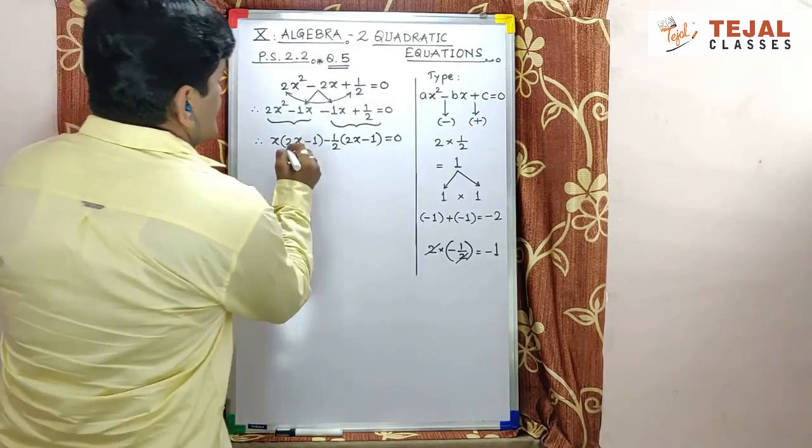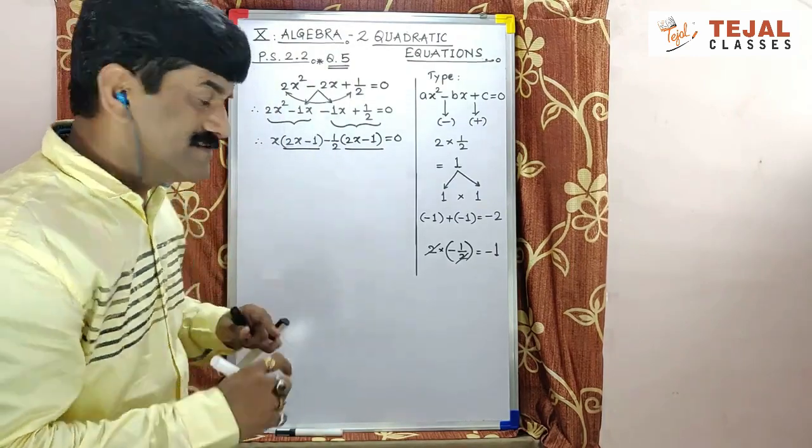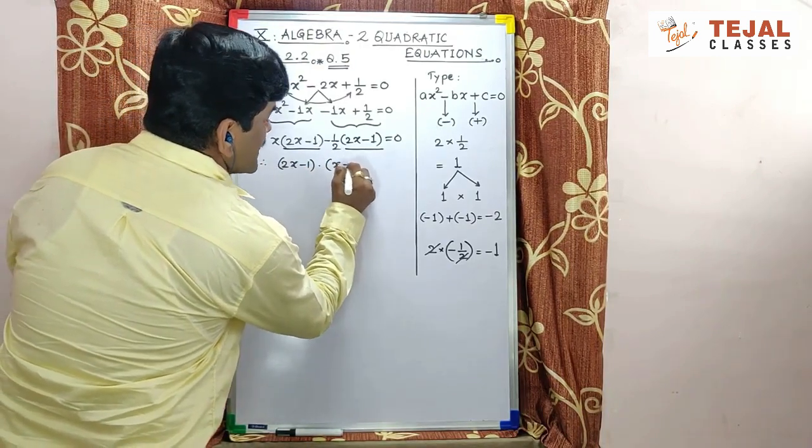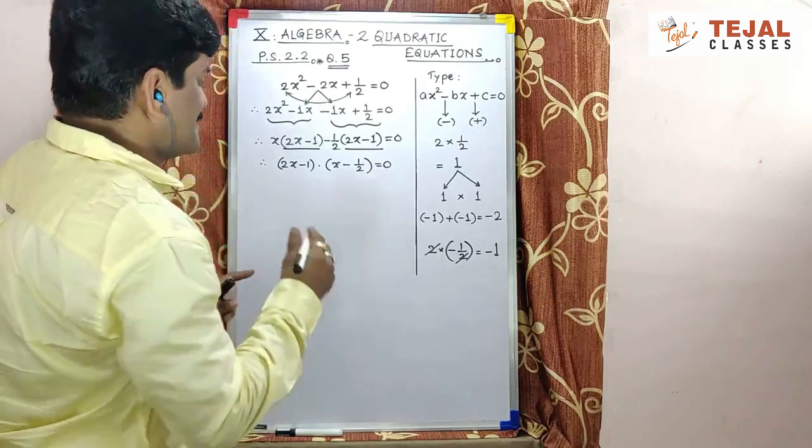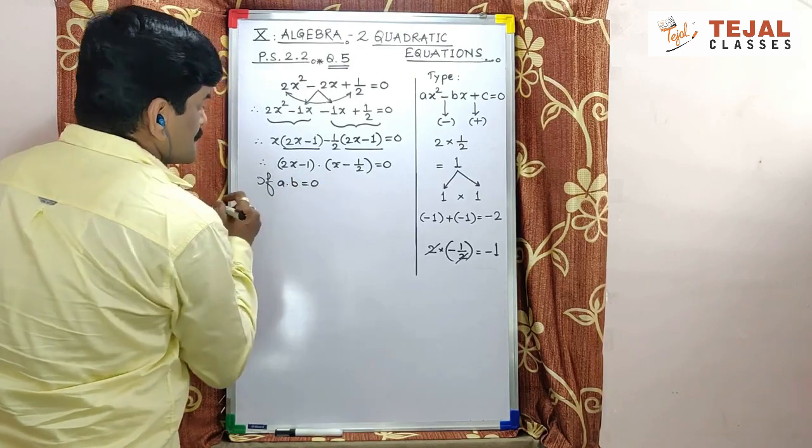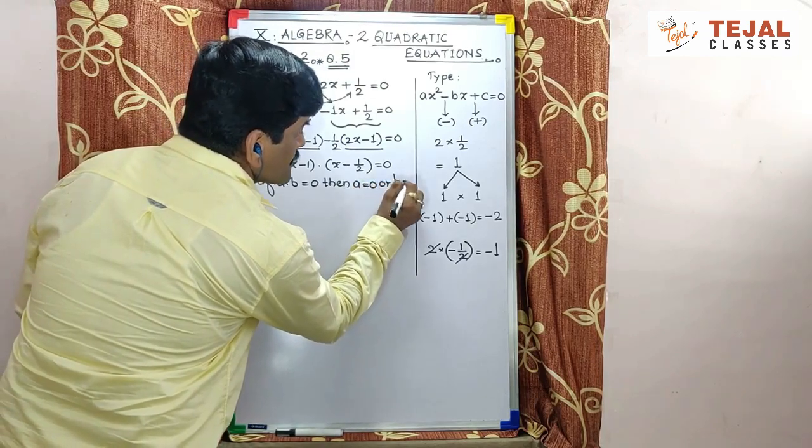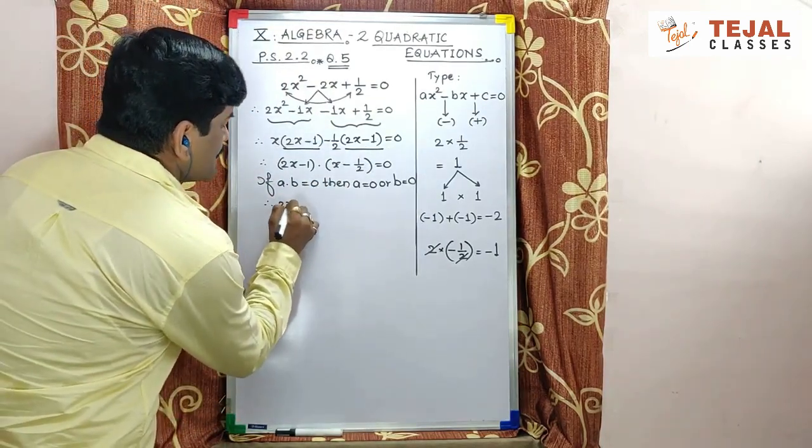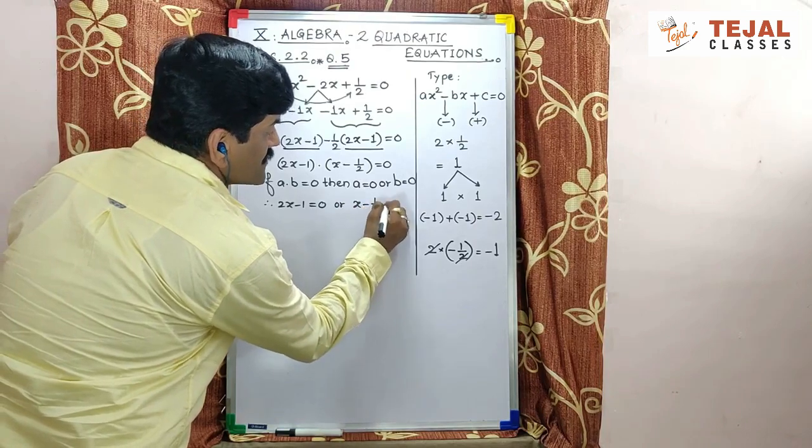Now, this bracket and this bracket repeated twice. Same bracket twice. Iska matlab main kaise likhne wala hun? 2x minus 1 into x minus 1 upon 2 which is equal to zero. Ye, 2 bracket ka product zero aa gaya. So, we have to write if a into b equal to zero, then a equal to zero aur b equal to zero. Dono value zero hum log agar likhte hai. Ab dekhe. We will get 2x minus 1 equal to zero or x minus 1 upon 2 equal to zero.